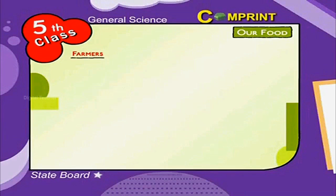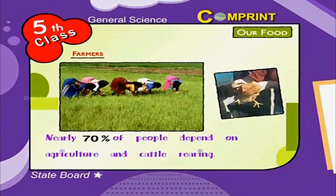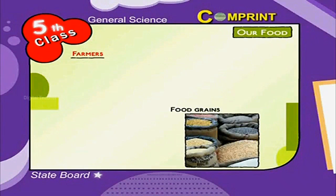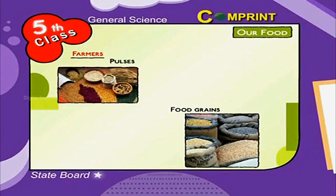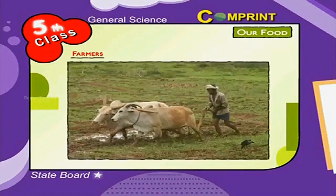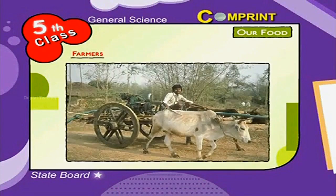Farmers. Our country India is an agricultural based country. Nearly 70% of people depend on agriculture and cattle rearing. Food grain, pulses, vegetables, and fruits are grown by farmers in their farms. They take the help of cattle to plough and to carry loads.